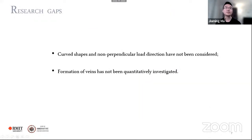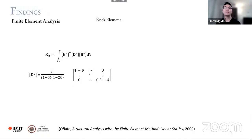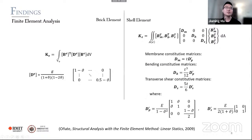There are still gaps in the study of computational morphogenesis of leaf veins. First, the influence of the curved shape of mesophyll on vein distribution has not been addressed — current studies only use flat plate models. Also, quantitative comparisons between experimental measurements and optimized results are insufficient. For shell elements, the D matrix is composed of membrane stiffness, bending stiffness, and shear stiffness, each with thickness at different exponents.